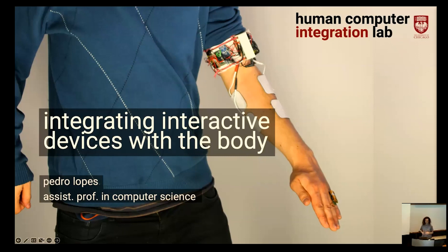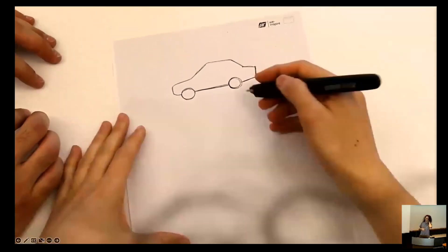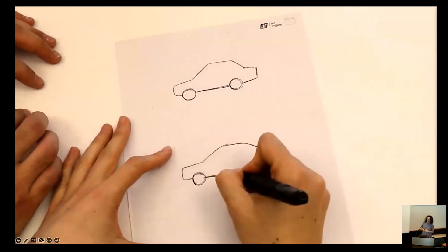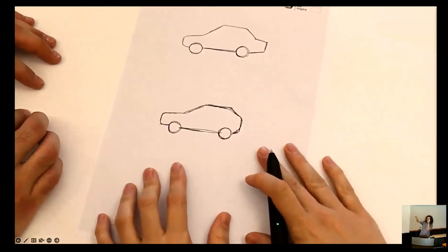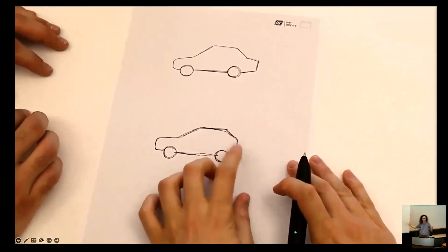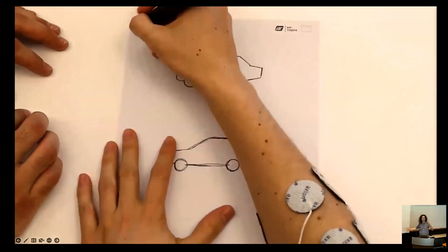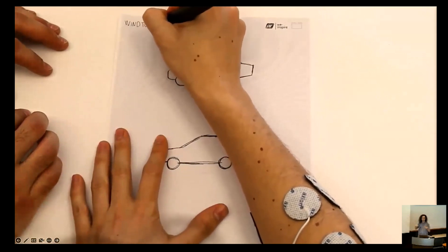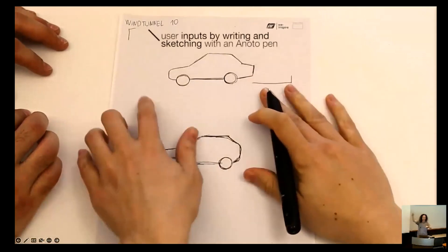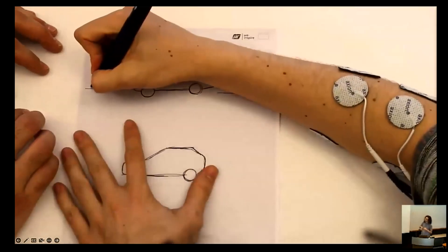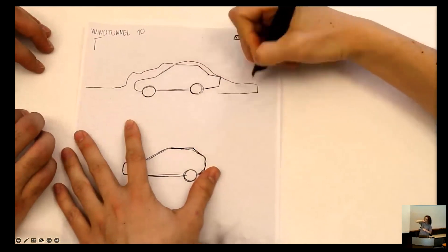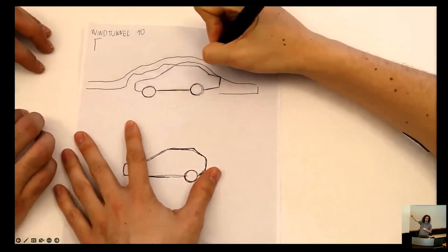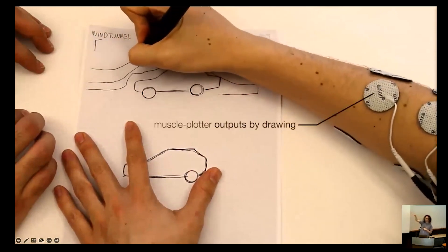Is it biological integration, chemical, or just electronics? Here's a device I made during my PhD called Muscle Plotter. It uses a pen that digitizes everything you draw. Two car designers are sketching car shapes and discussing which are more aerodynamic. Normally they'd run complex wind flow and fluid dynamics simulations on a desktop computer to find the answer.